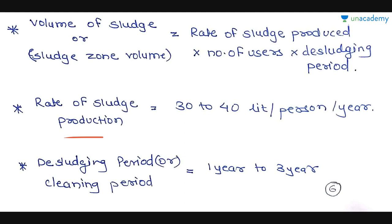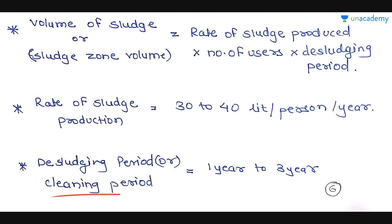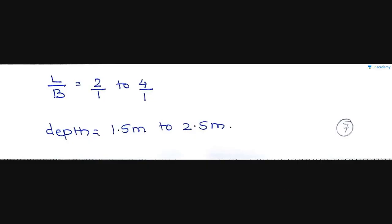The rate of sludge production is 30 to 40 liters per person per year. The desludging or cleaning period for a septic tank is 1 to 3 years. The L to B ratio is 2:1 to 4:1 — any ratio in that range can be assumed. The depth of the tank ranges from 1.5 meters to 2.5 meters. These are the overall design parameters for a septic tank.